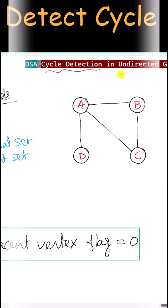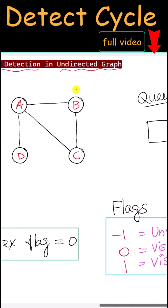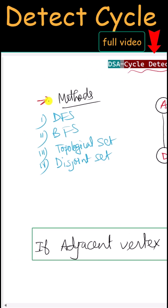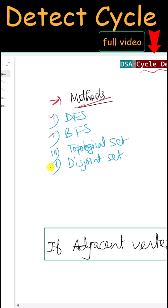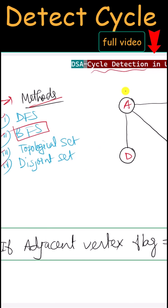Let's see how we can detect a cycle in an undirected graph. There are different methods we can use: DFS, BFS, topological sort, and also disjoint set. In this video, we are going to use BFS.